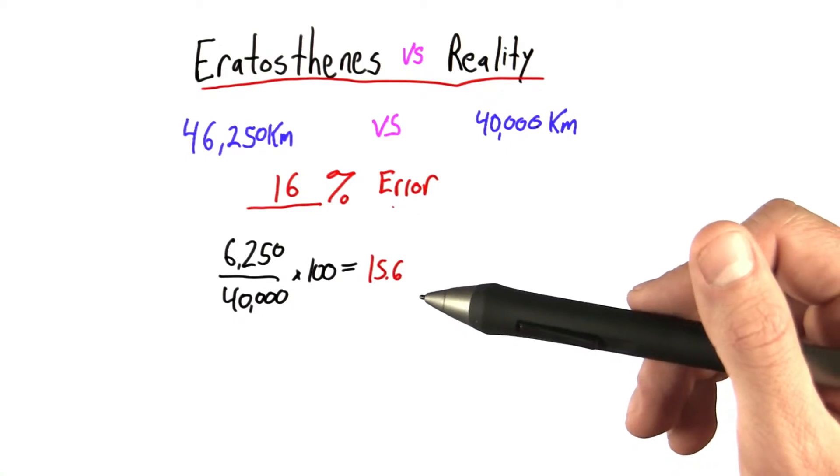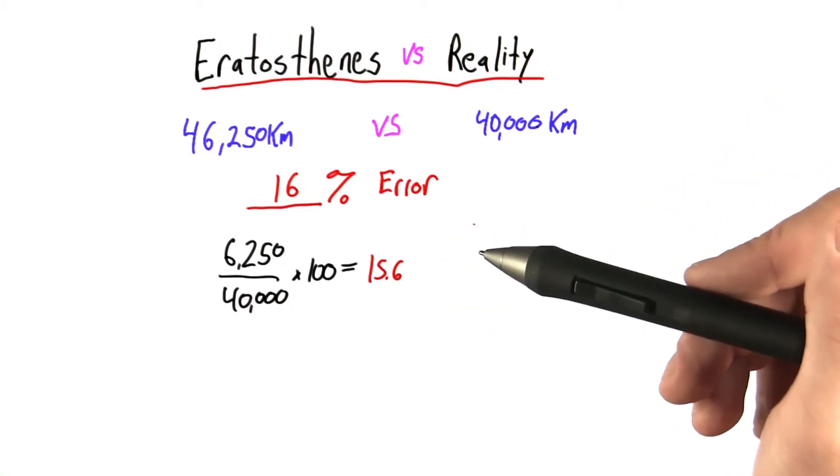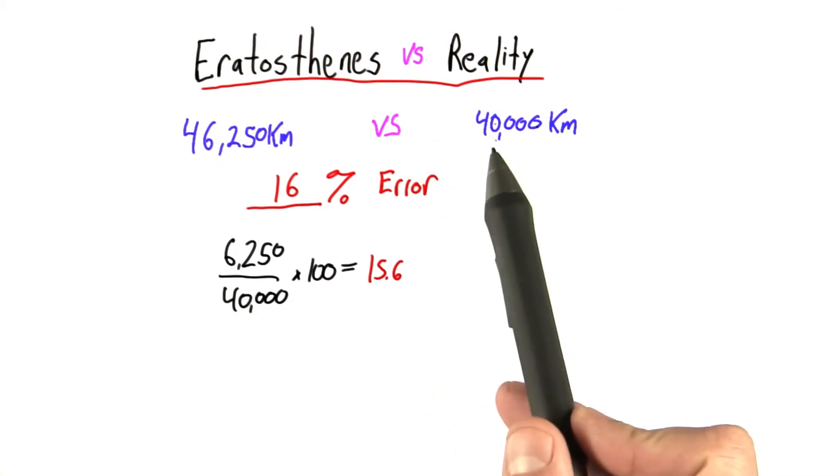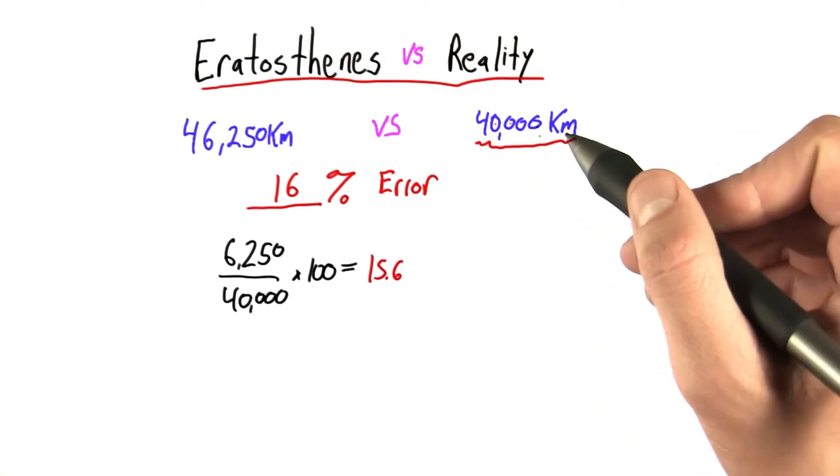The tricky thing is identifying and quantifying the sources of our error. Now, in this situation, we're really lucky. We have a known reference number to compare to. We know the earth has a circumference of 40,000 kilometers.